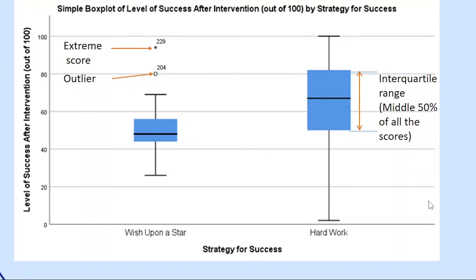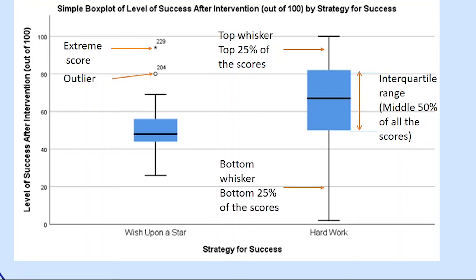The body of a box plot represents the interquartile range, which is the middle 50% of all scores in a data set — so 50% of all scores fall within the box. The top whisker of a box plot represents the top 25% of scores in a data set, while the bottom whisker represents the bottom 25% of all scores.